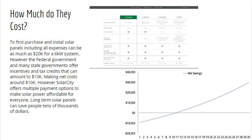Well, to first purchase and install solar panels, including all the expenses, they can cost up to $20,000 for a 6-kilowatt system. However, the federal government and many state governments offer tax incentives and tax credits that can amount to $10,000, making the net cost about $10,000. However, SolarCity offers multiple payment options to make solar power affordable for everybody. Long-term solar panels can save people tens of thousands of dollars.